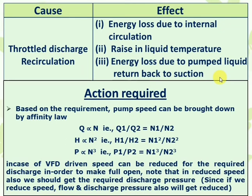So how can we mitigate and control the energy loss caused by throttling or recirculation? We need to reduce the pumping rate. To reduce the pumping rate, we can reduce the speed of the pump. If it is a VFD-driven pump, we can reduce the speed by frequency control. By the affinity law, discharge flow Q is directly proportional to the speed N of the pump.